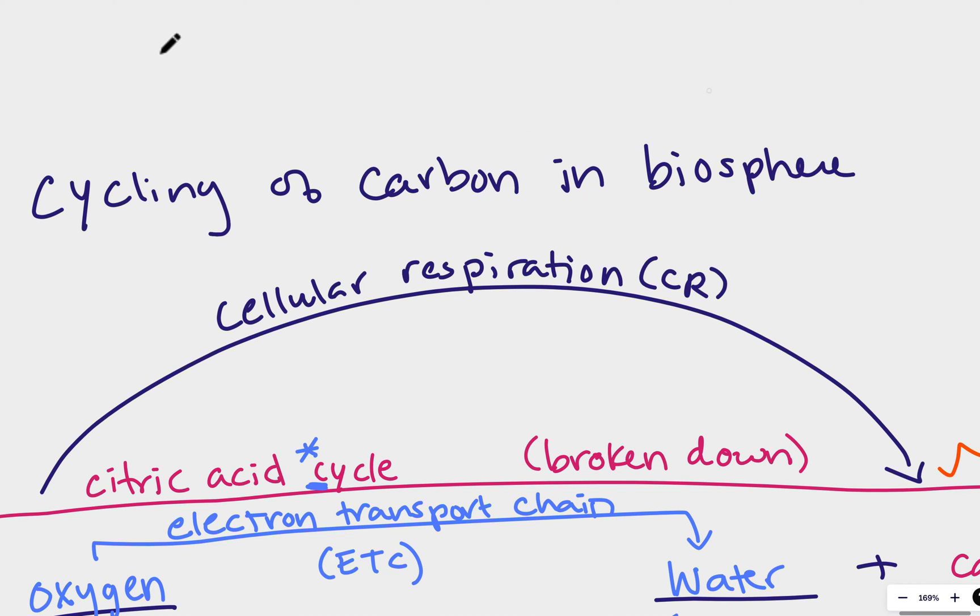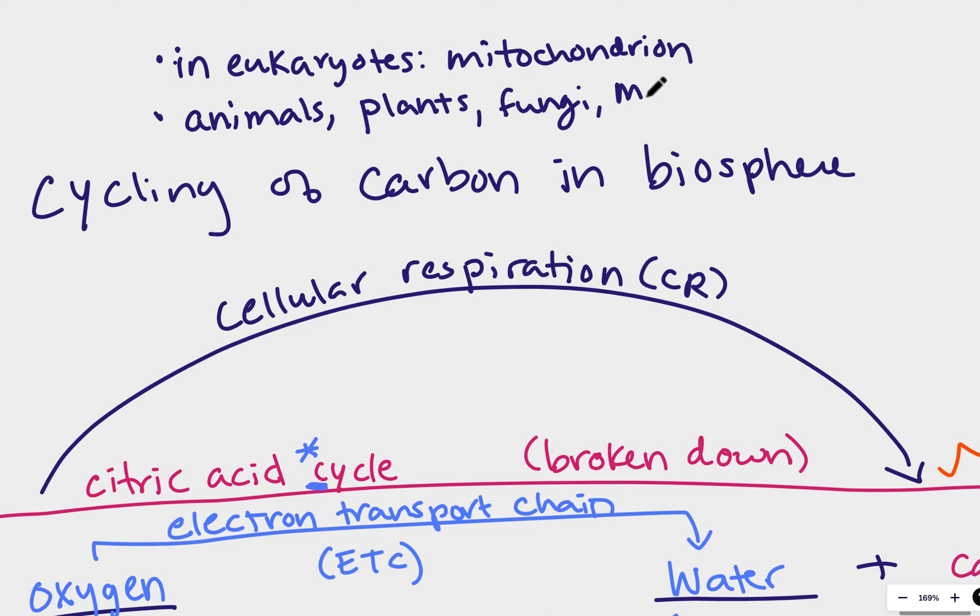Who does cellular respiration? Well, in eukaryotes it's in the mitochondrion. And we have animals that do this. Plants, they do cellular respiration too. They got to make ATP. Fungi, lots of types of bacteria. We have the seaweed and algae we talked about before. It does photos, it does cellular respiration too.